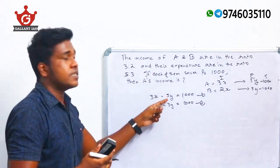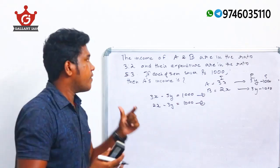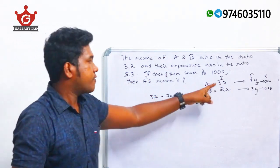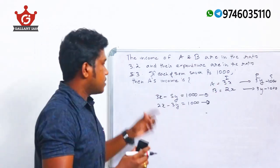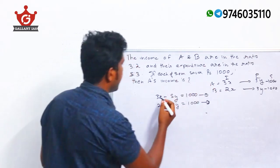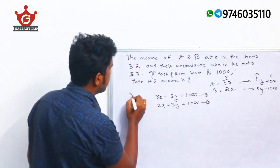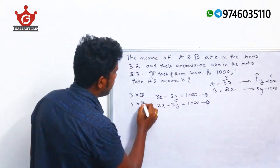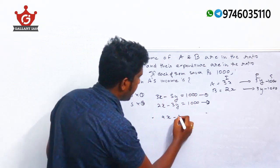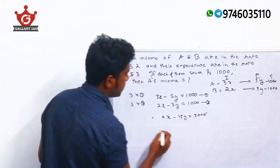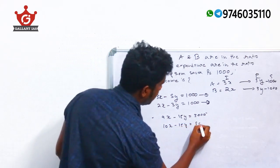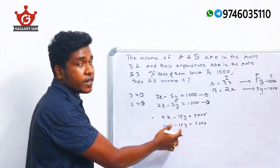To eliminate Y, multiply equation 1 by 3 and equation 2 by 5. Equation 1 becomes 9X − 15Y = 3000. Equation 2 becomes 10X − 15Y = 5000.